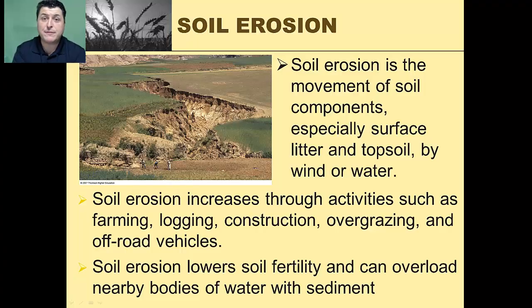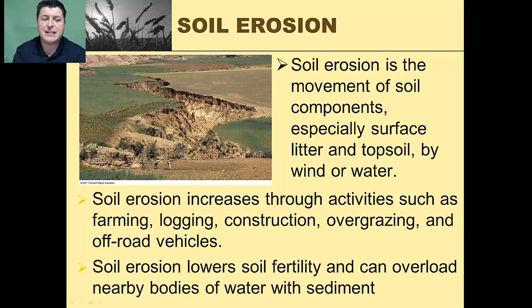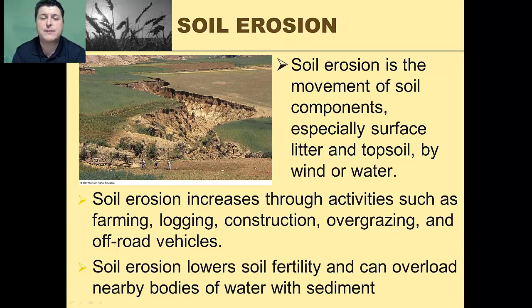Soil erosion is the movement of soil components, especially surface litter and topsoil, by wind or water. Soil erosion is increased as a result of activities like farming, logging, construction, overgrazing, and off-road vehicles — basically anything that disrupts the surface of soil and removes any plant cover that might maintain that soil in place.